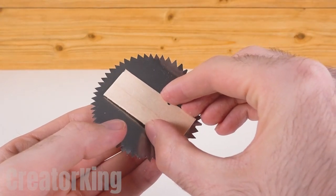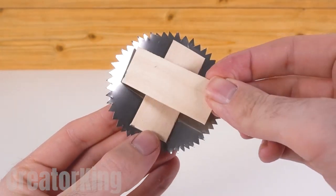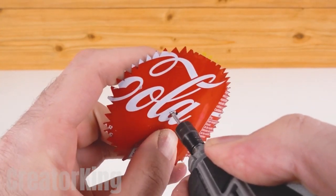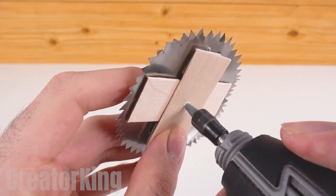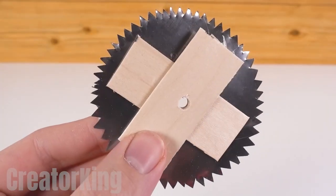Once we have both, proceed to hot glue them in a cross. Drill a hole right in the center of the saw, making sure that it goes through both the blade and the wooden cross piece.